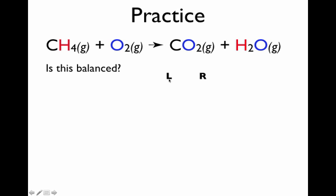You can pause the video and try to balance this one as well, then resume and I will show you how I would do it. The way I would do it is the same type of thing — make a little table, left side of the arrow, right side of the arrow, and go one by one through each element. One thing students try to do when they start out is balance everything at once, and in my experience this causes more headaches than it solves. My attitude is: solve one problem first and then deal with the other ones later. So I'm going to focus on carbon first. How many carbons on the left side of the arrow? Looks like only one. How many on the right side? Looks like only one as well. So the carbons are balanced.